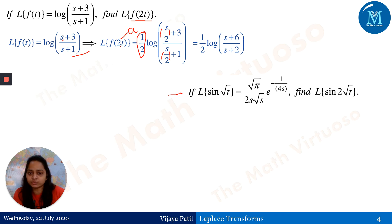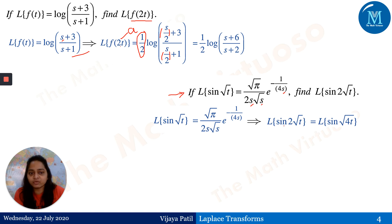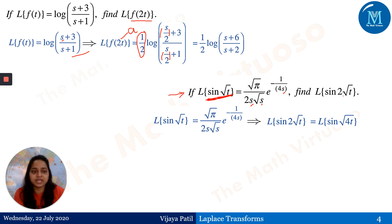This next example is very important. Given that the Laplace transform of sin(√t) is √π / (2s√s · e^(1/(4s))), what is the Laplace transform of sin(2√t)? The key step is to bring the 2 inside the square root sign. Since 2 goes inside the square root, it becomes 4, so sin(2√t) = sin(√(4t)). This is the important step to note.